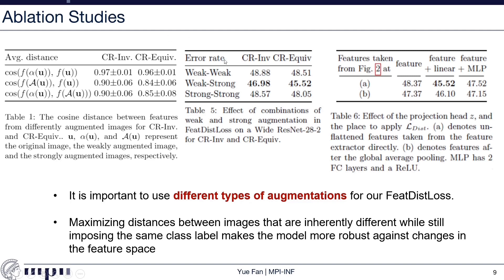In Table 5, we study the effect of different combinations of weak and strong augmentations in the feature distance loss. Our default setting uses the weak-strong pair, pushing apart the weak and strong features. But potentially we could also push apart features from weak-only or strong-only augmentations. The results show that the weak-strong pair gives the best numbers for both CR invariance and CR equivariance, but CR invariance is worse than CR equivariance. Therefore, in our main results we push apart features from different kinds of augmentations rather than the same kind, since this is where the largest feature discrepancy can be expected.